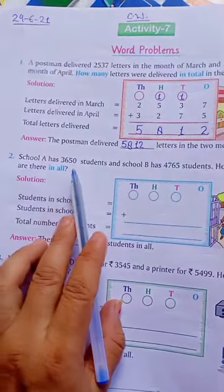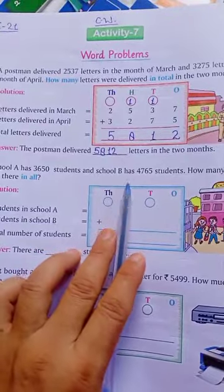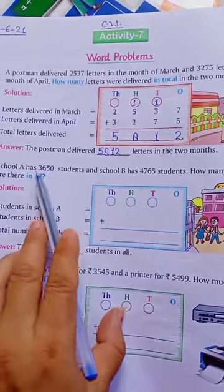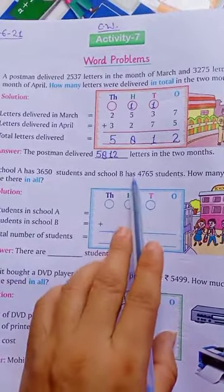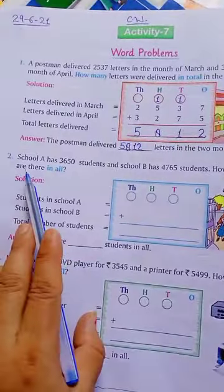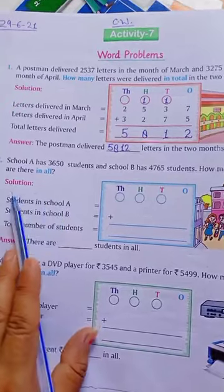you have given school A has 3,650 students. And school B has 4,765 students. School A has this many students and school B has this many students. How many students are there in all? We need to find the total students in both schools.